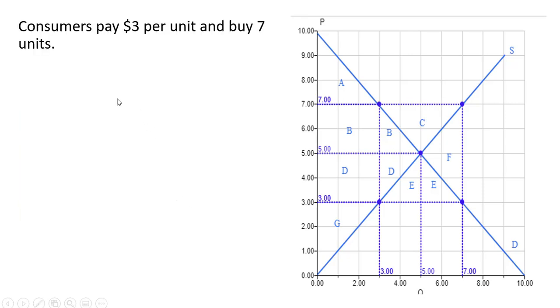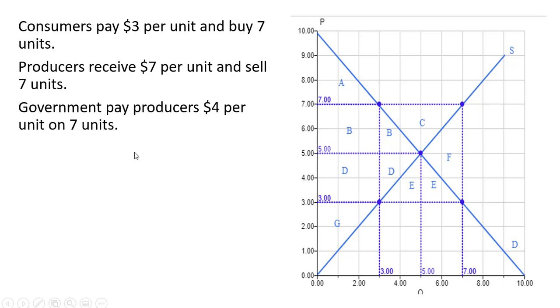Now moving on to the deficiency payment price floor. As we said, consumers are going to be paying $3 per unit and they're going to buy 7 units. Producers are going to be receiving $7 per unit and, again, selling 7 units. And the government will be paying producers the deficiency payment, the difference between 7 and 3 or $4 per unit on these 7 units.